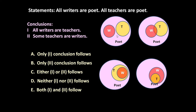Any conclusion can be drawn only if it is satisfied by all four possible Venn diagram figures — then only we say this conclusion surely follows. Conclusion one is: all writers are teachers. It follows only in one figure where writers are inside teachers, but in the other three figures all writers are not teachers. So we say this conclusion does not follow.